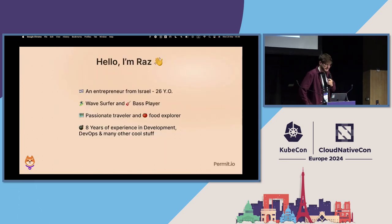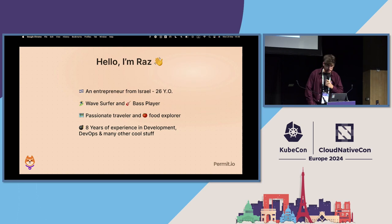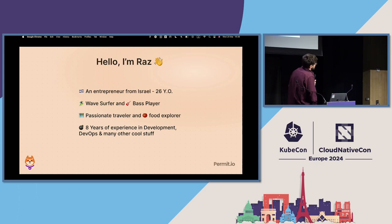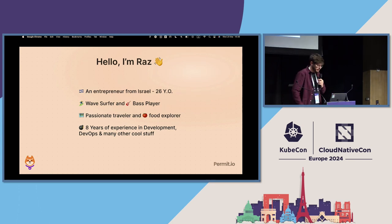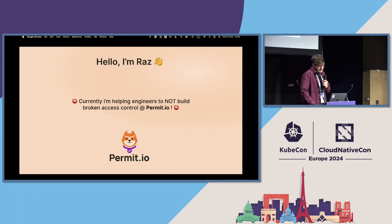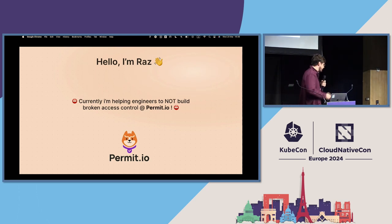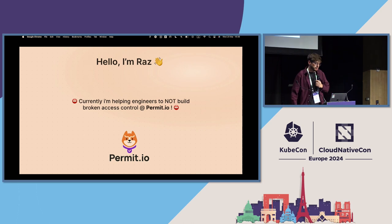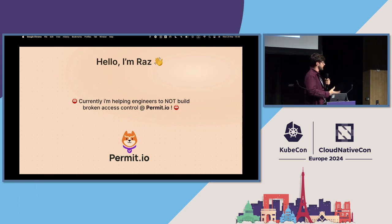So let me introduce myself. I'm Raz Cohen, an entrepreneur from Israel, 26 years old — web surfer, passionate about traveling and food, which is why I love Paris. I have eight years of experience in development, DevOps, and platform engineering. Currently we are building at Permit.io a full-stack, end-to-end solution that basically tries to give engineers the solution so they don't have to build access control again.